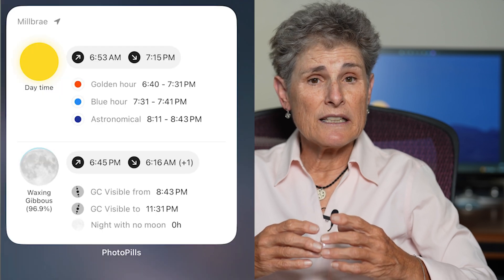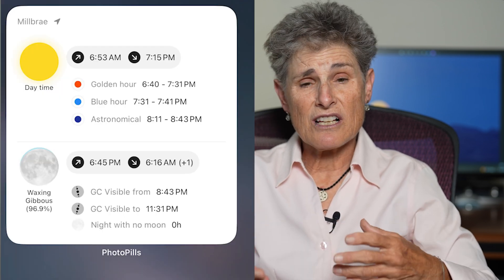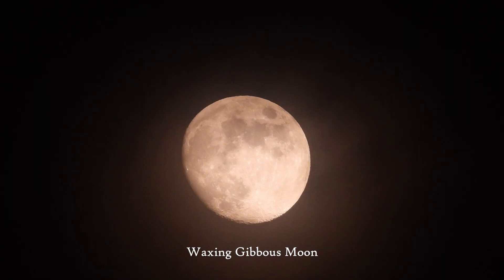PhotoPills has widgets you can add to your phone that will tell you the sunrise, sunset, moonrise, and moonset every day. Although the moon is only full on one specific day, it will appear full or almost full a couple of days before and a couple of days after full moon. But keep in mind that the moon rises 20 to 50 minutes later every day, depending on what time of year it is.